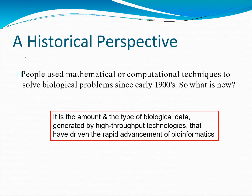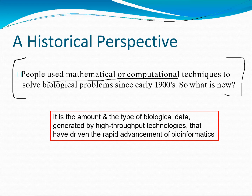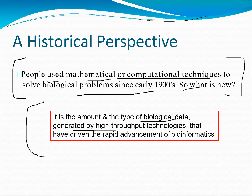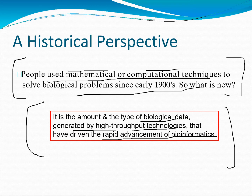People have used mathematical and computational techniques to solve biological processes since the 1900s. What is new is the amount and type of biological data generated by high-throughput technologies that have given rapid advancement to bioinformatics. The name bioinformatics was given due to its time efficiency. Through high-throughput technologies, data can be generated very quickly in a fraction of seconds. It has a number of databases — from PDB, NCBI, and others — where you can just copy and paste a sequence to get all the needed information about a particular genome.